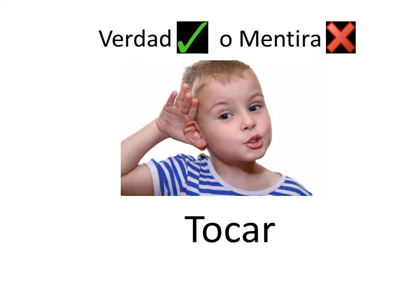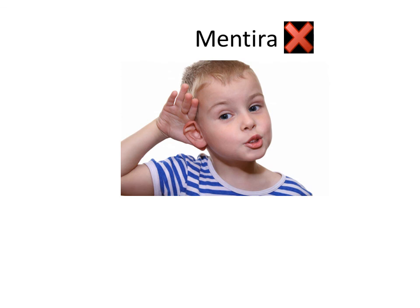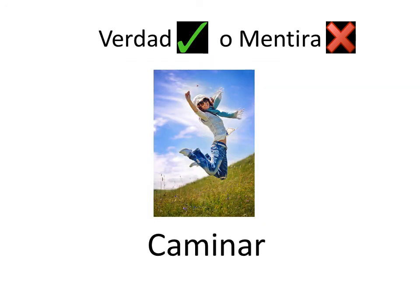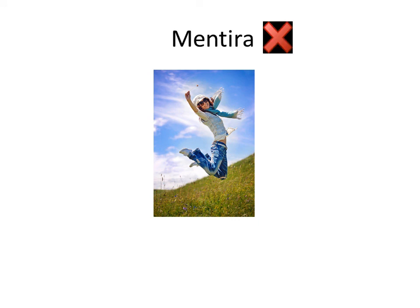Verdad o Mentira? Tocar. Verdad o mentira? Mentira. Muy bien. Tocar means to play, like an instrument. It should have been escuchar. Verdad o mentira? Caminar. Verdad o mentira? Mentira. Muy bien. Caminar means to walk. It should have been saltar — to jump. Well done.